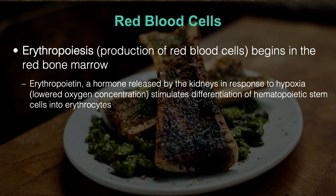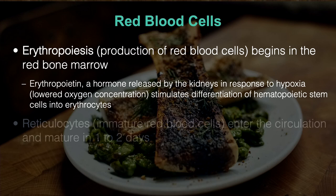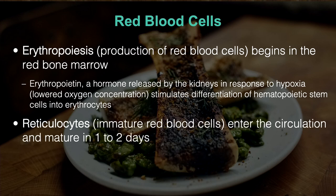EPO is what initiates red blood cell production. We produce them in the red bone marrow. When they're not mature yet they're called reticulocytes. They mature in one to two days and are released as fully functional erythrocytes in the blood, where they sit for about three or four months doing the job of transporting gas.